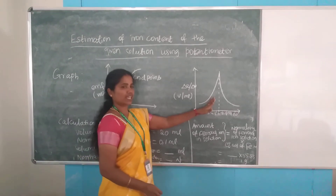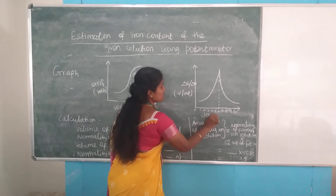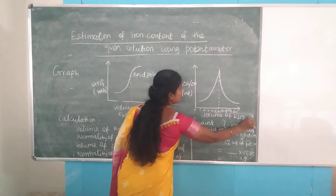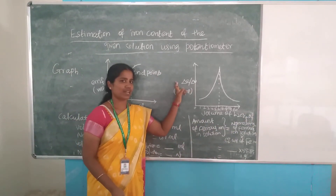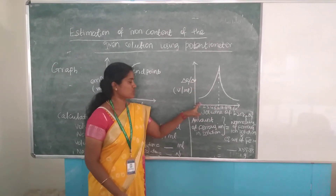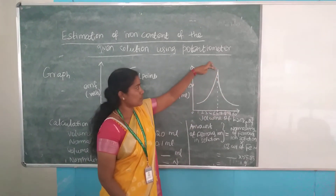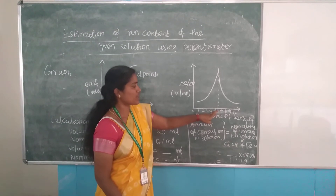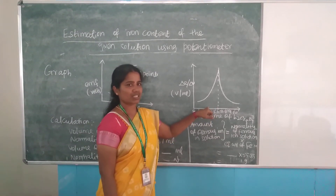Using this second graph we can say the accurate end point. Here we are taking x-axis as volume of K₂Cr₂O₇ and in y-axis we are taking delta E by delta V, which we have already seen in the table. By drawing these two axes we get a graph with a highest peak, and the volume corresponding to that highest peak is the volume of the ferrous solution at the end point.